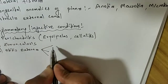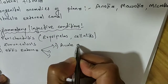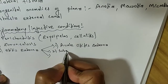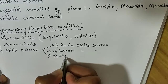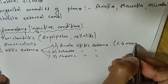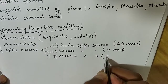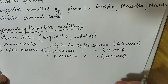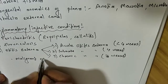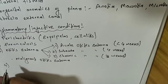Otitis externa is subclassified into acute (less than 4 weeks duration), subacute (around 4 weeks), and chronic (more than 4 weeks). There is also malignant otitis externa. The fourth disease is otomycosis, and the fifth is herpes zoster oticus, also known as Ramsay Hunt syndrome.